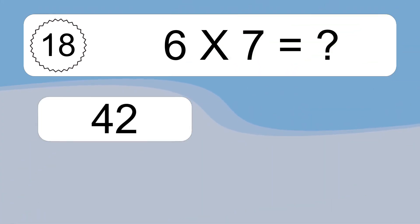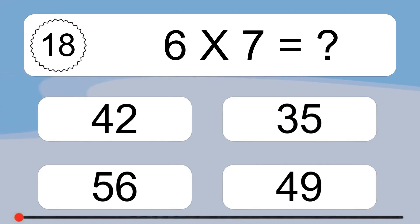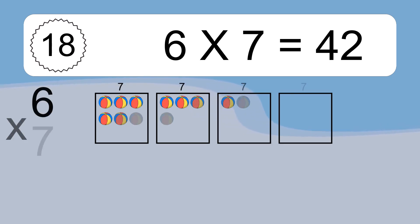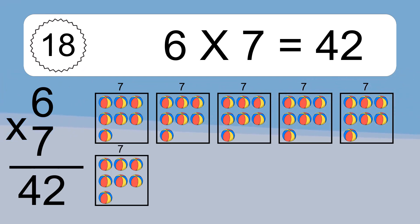6 times 7 equals what? 6 times 7 equals 42. We have 6 boxes, and each box has 7 colorful balls inside. If you count all the balls in all the boxes together, you will have 6 times 7 balls. This equals 42 balls.